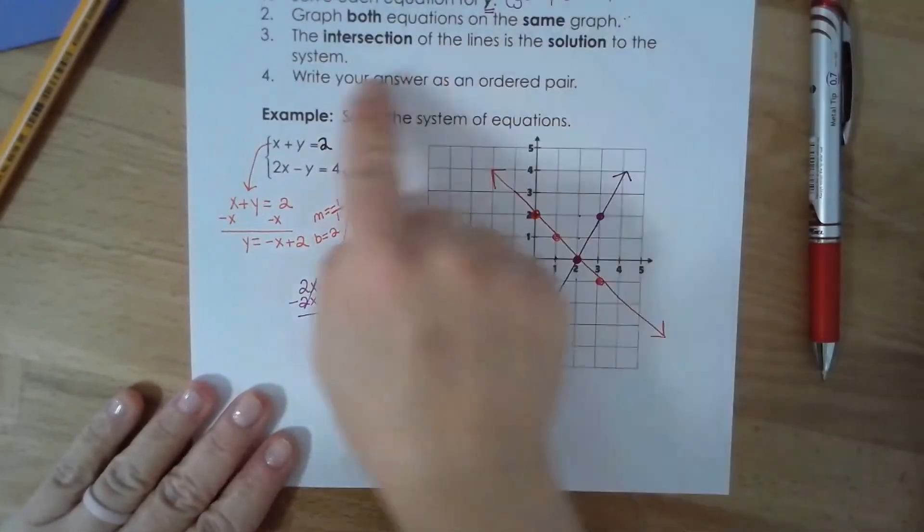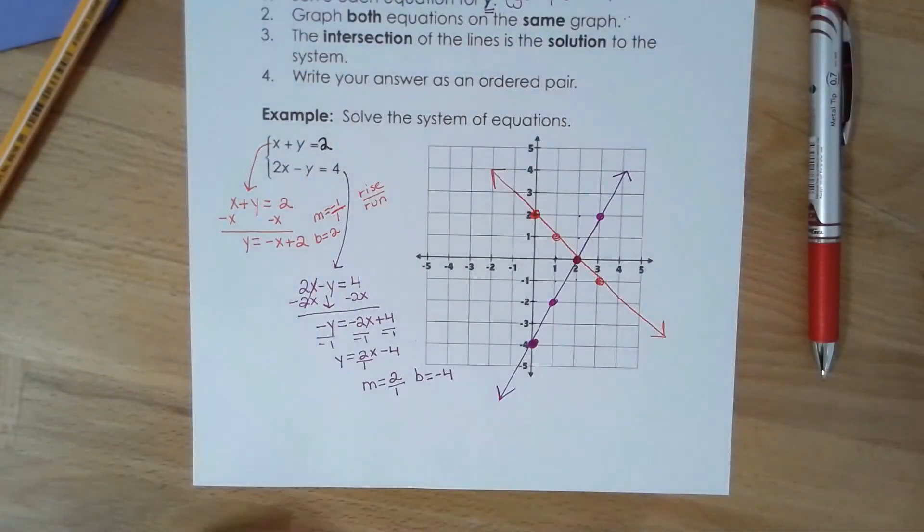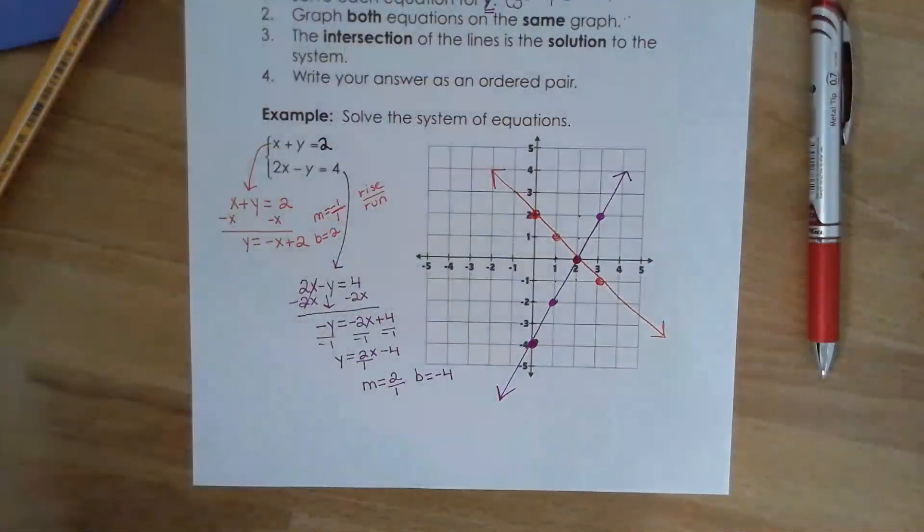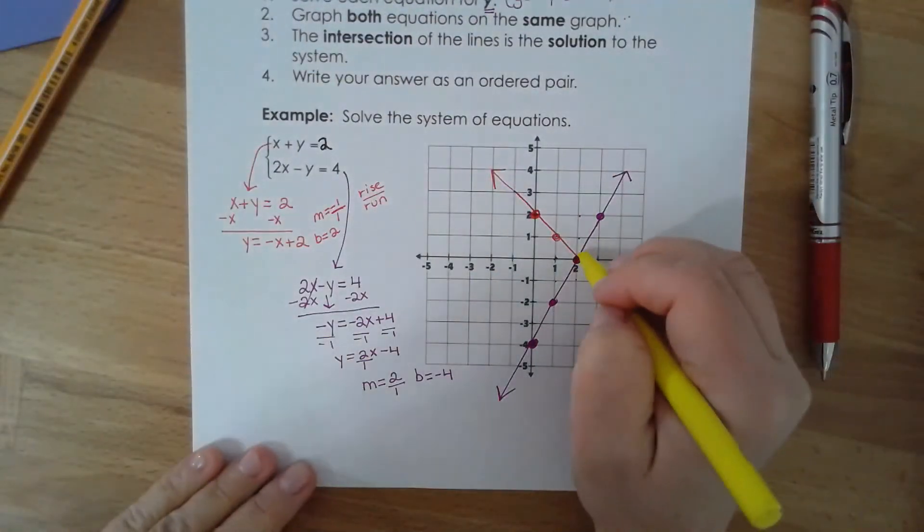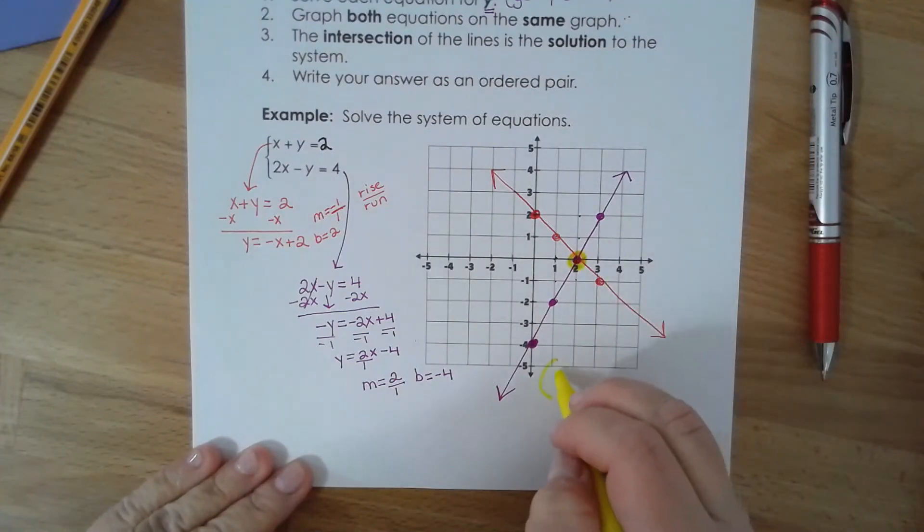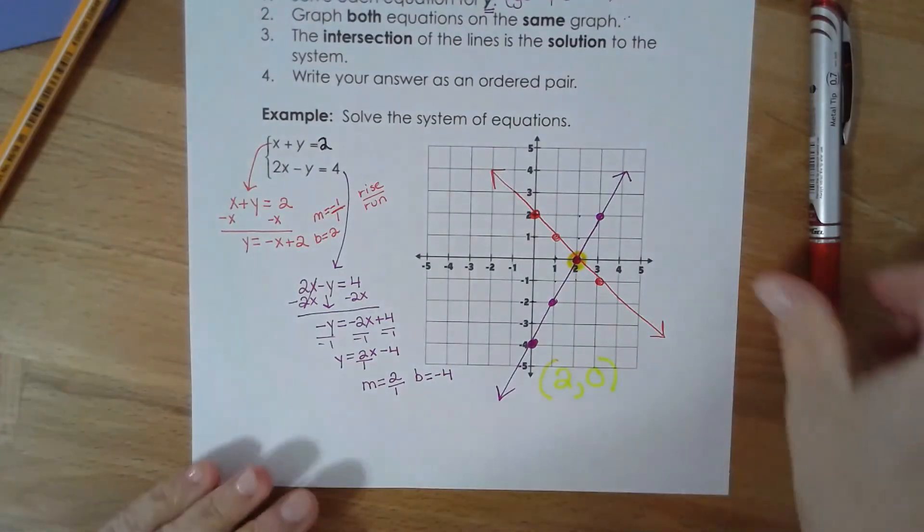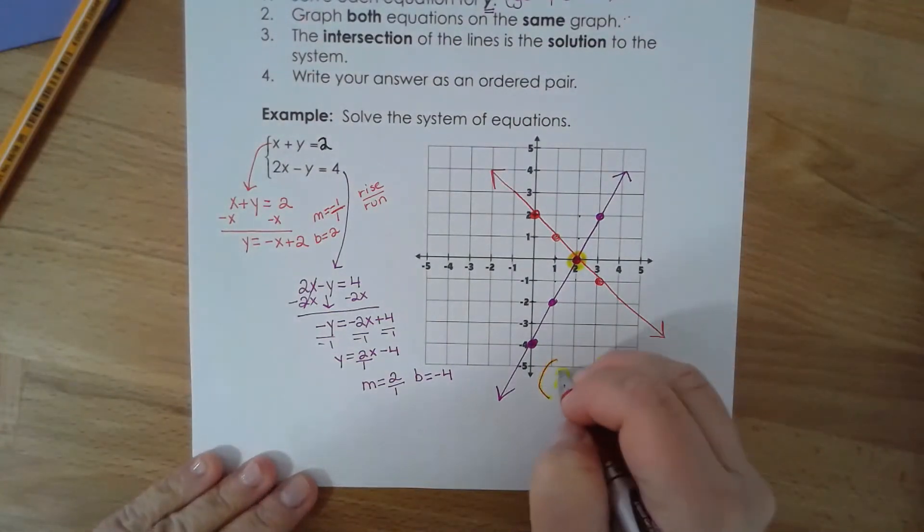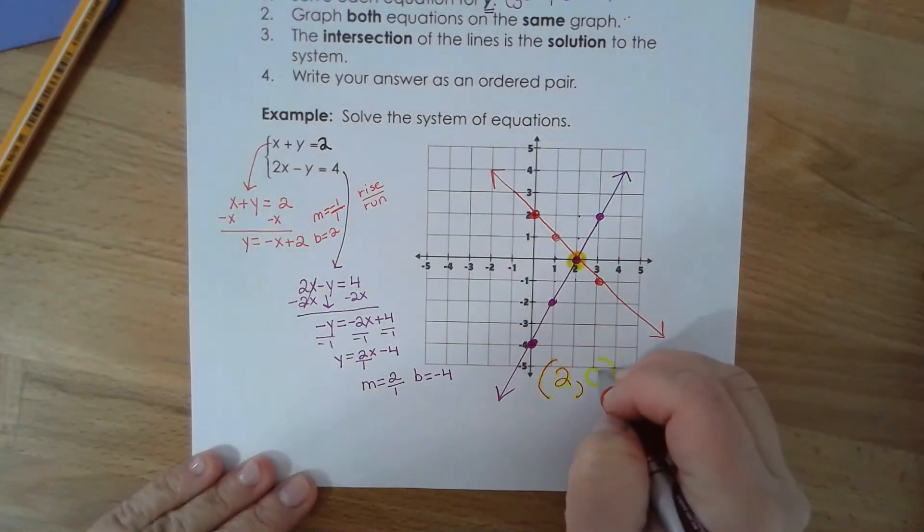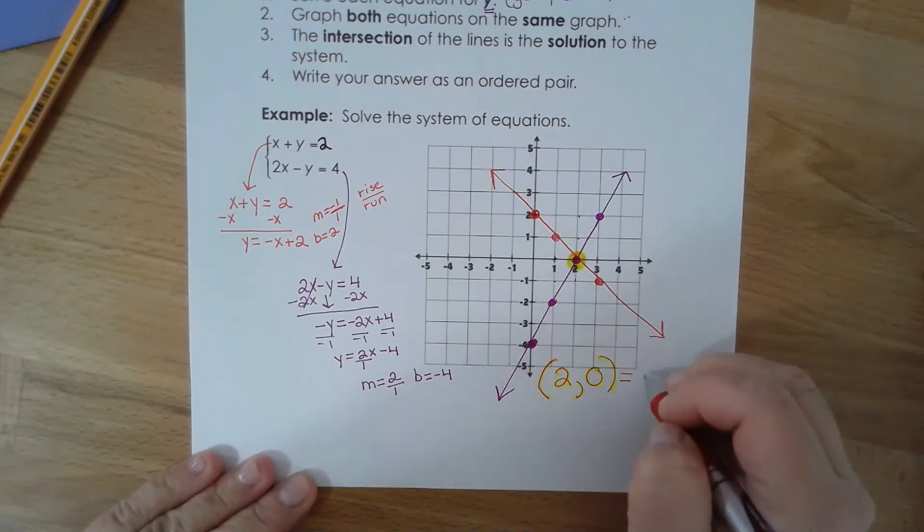Step three, the intersection of the lines is the solution. So you want to notice where do they intersect? So they intersect at two comma zero. Right, so two comma zero is my solution.